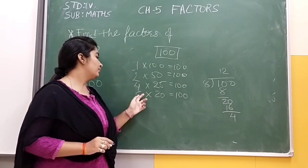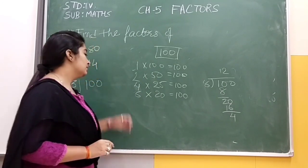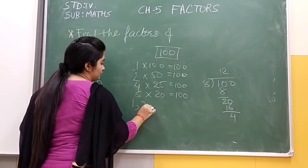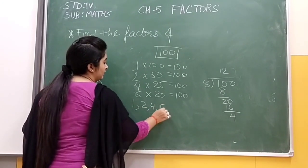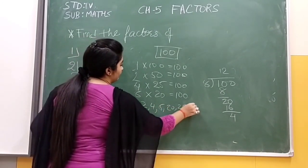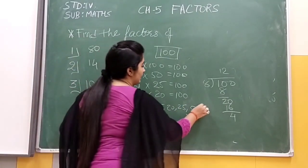So what are the factors? 1, 2, 4, 5, 20, 25, 50, 100. These are our factors: 1, 2, 4, 5, 20, 25, 50, and 100.